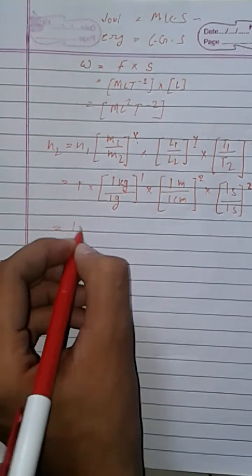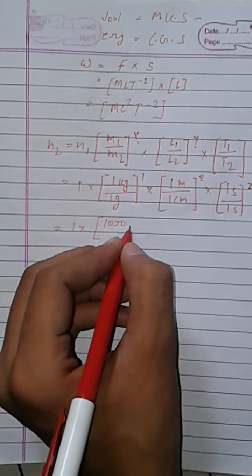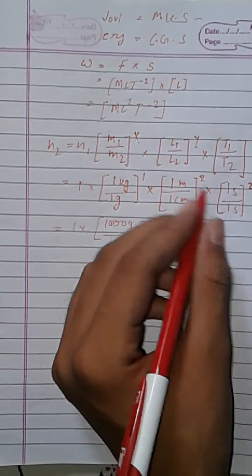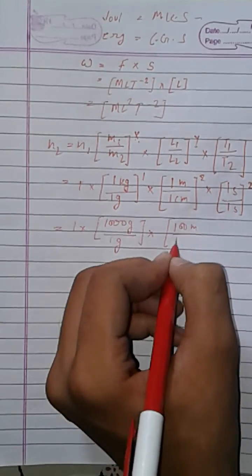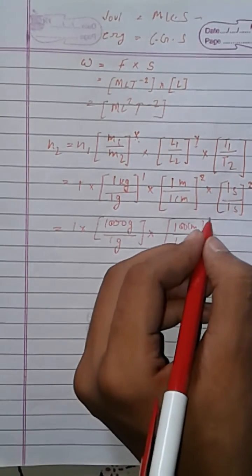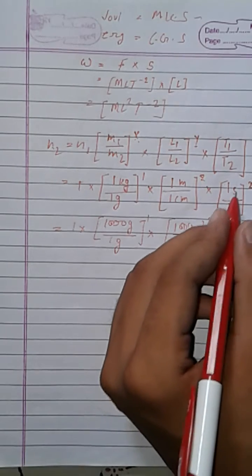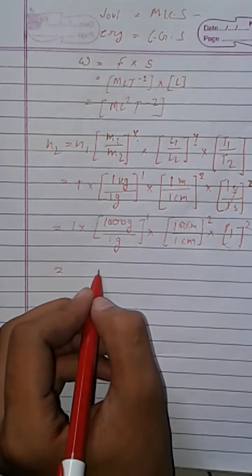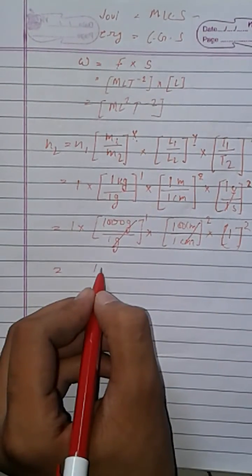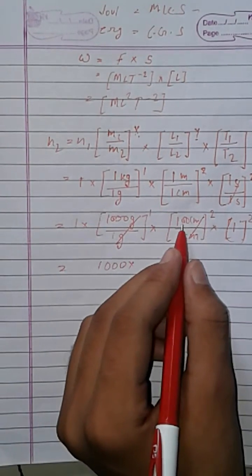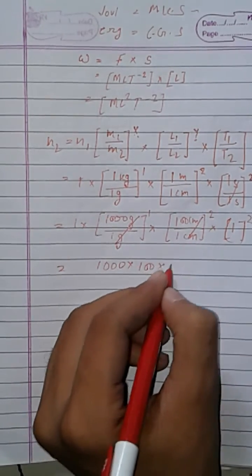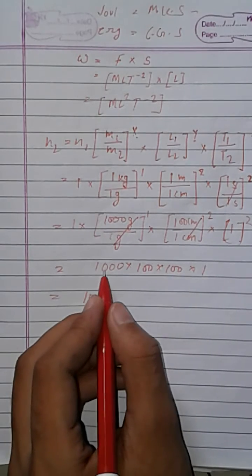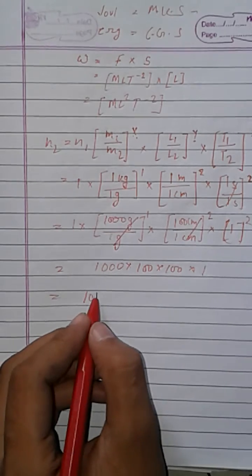Converting kg to grams: 1 kg equals 1000 grams, so we get 1000/1. Converting meters to centimeters: 1 meter equals 100 centimeters, so we get 100/1 to the power 2, which is 100 times 100. That gives us 1000 times 10000, and counting the zeros — 1, 2, 3, 4, 5, 6, 7 — the power of 10 is 7 ergs.